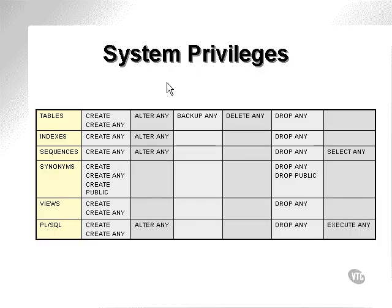Here's a quick picture of system privileges. These particular system privileges are privileges which allow users to do things with database objects — logical objects such as tables, indexes, sequences. In other words, a user could create the object, alter the object, backup, delete, drop, etc. Do things with tables, indexes, sequences, and so on.